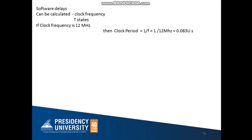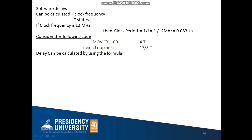Now let us try to understand how to calculate the delay. For this I am taking an example of the following code. I have this code where I am loading a value of 100 into the CX register. Once I load the value of 100 into the CX register, I will start executing the loop instruction. The loop instruction keeps going back to this particular location unless and until the value of CX is equal to 0.